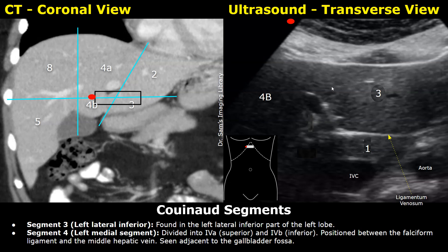The ultrasound image on the right is in transverse plane. The probe is placed in a transverse orientation with the indicator towards the patient's right, moved away from the midline towards the right, just touching the costal margin, or placed between the ribs in the intercostal spaces. To get a transverse image of the liver, we can also see the IVC and aorta in cross section. Once you get this type of image, you will find a hyperechoic bright line — this is the ligamentum venosum. Just posterior to it is the caudate lobe, segment 1, seen between the IVC and the ligamentum venosum.